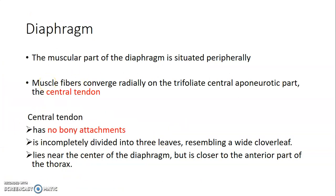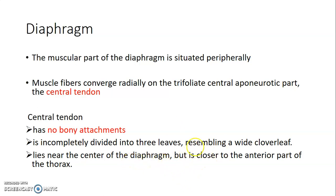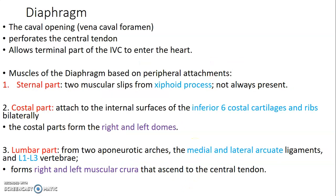The diaphragm is muscular at the periphery and the central part is tendinous. These muscle fibers converge to form the central tendon. The central tendon has no bony attachments and is divided into three leaves that resemble a cloverleaf, lying at the center of the diaphragm, positioned closer to the anterior part of the thorax.